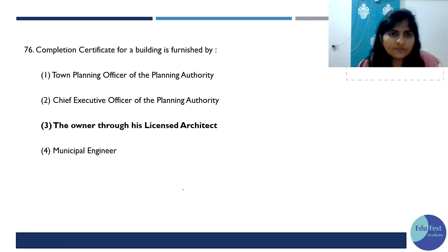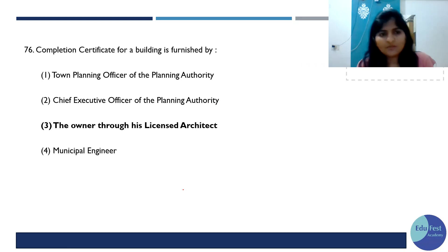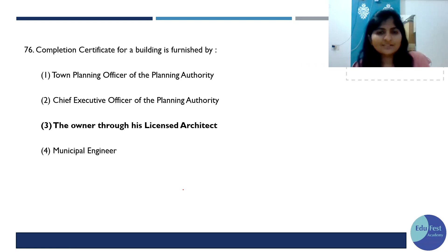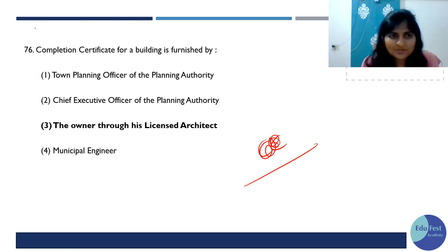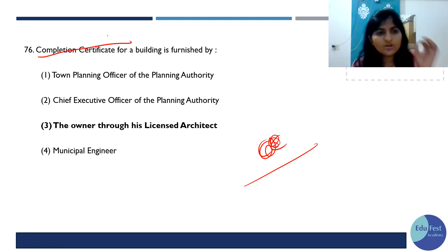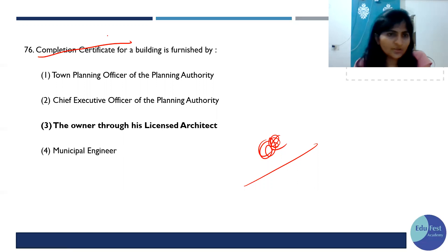The completion certificate of a building is furnished by — the second option is the owner or a licensed architect. So that is the completion certificate. The commencement certificate is different, but this is the completion certificate, and it is given by the licensed architect. So the answer is C.